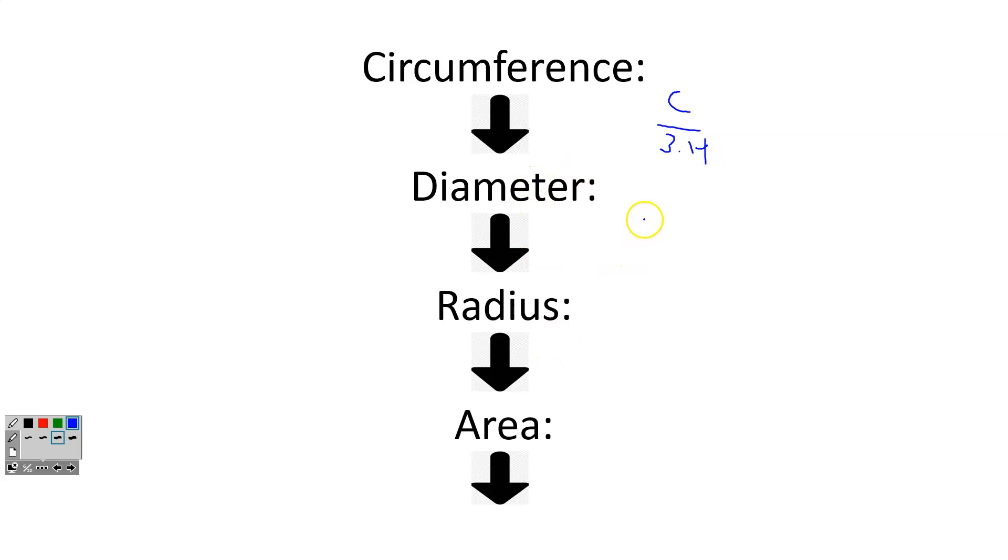You need to go from diameter to radius. You do that by just dividing by 2. And you need to go from radius to area using pi r squared.